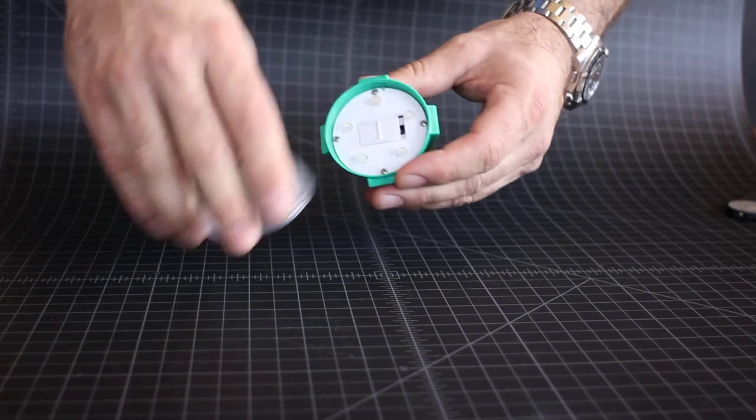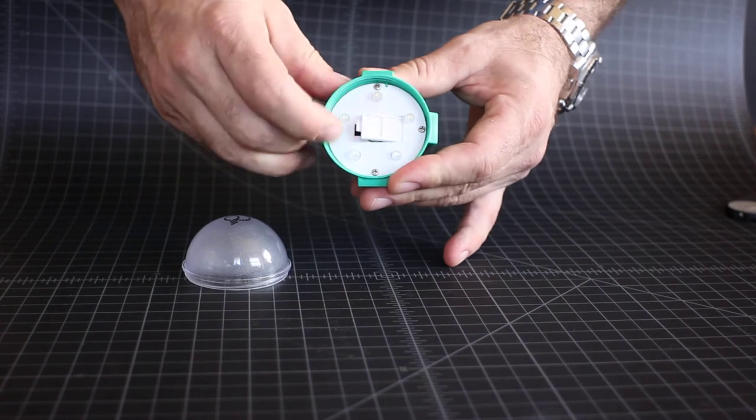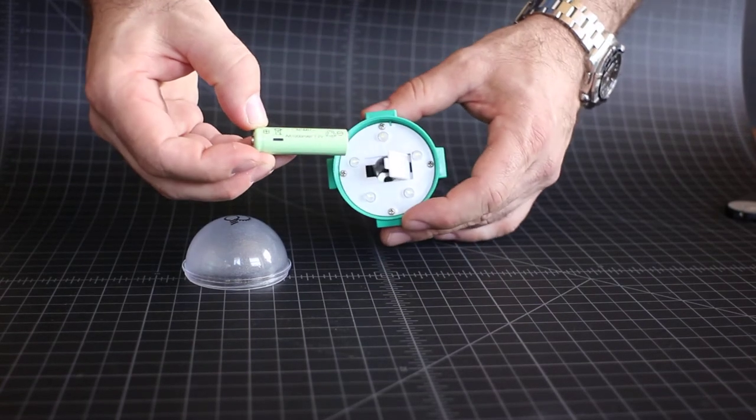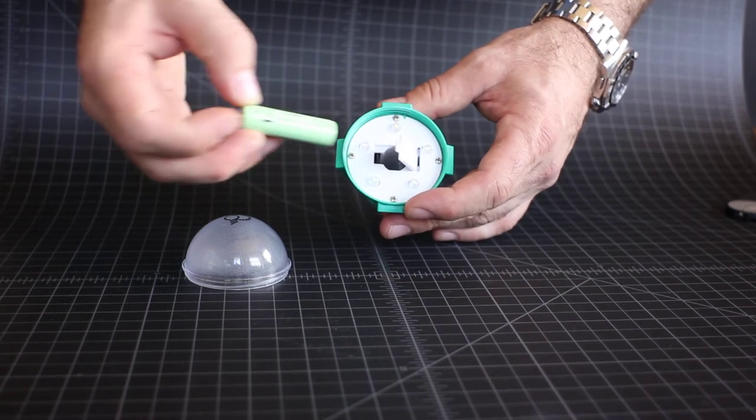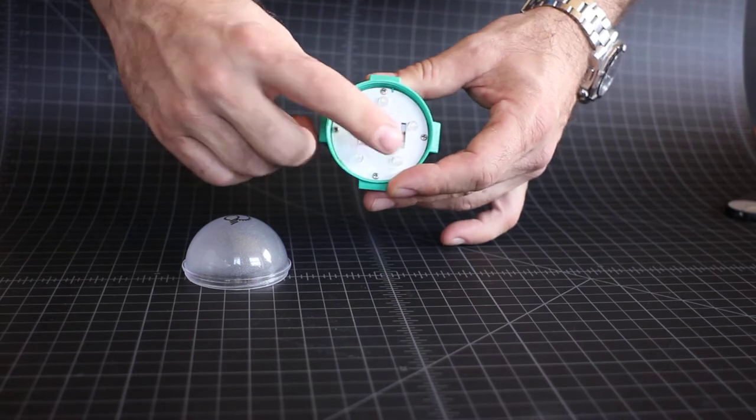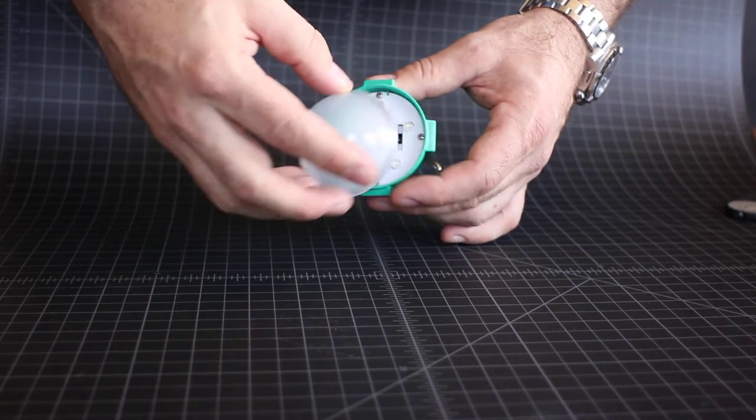I'm going to go ahead and open up the cover now and show you where the battery is located. This is a rechargeable nickel metal hydride battery that's replaceable after about three years. Here are those five LEDs that we were just talking about.